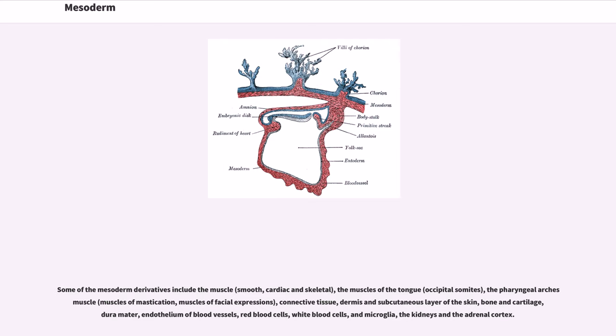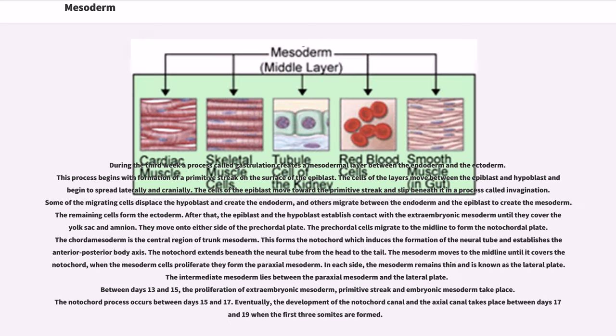During the third week a process called gastrulation creates a mesodermal layer between the endoderm and the ectoderm. This process begins with formation of a primitive streak on the surface of the epiblast. The cells of the layers move between the epiblast and hypoblast and begin to spread laterally and cranially. The cells of the epiblast move toward the primitive streak and slip beneath it in a process called invagination. Some of the migrating cells displace the hypoblast and create the endoderm, and others migrate between the endoderm and the epiblast to create the mesoderm. The remaining cells form the ectoderm.